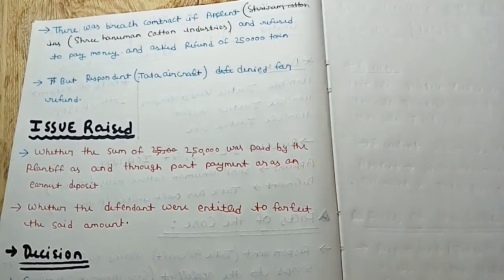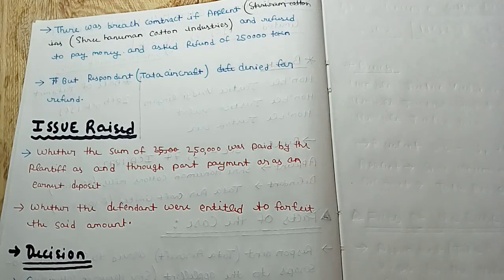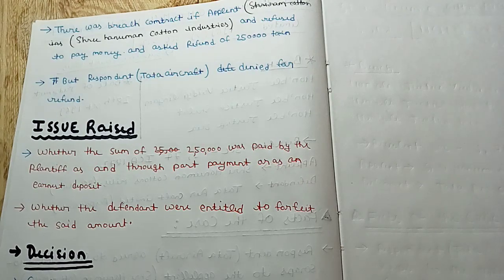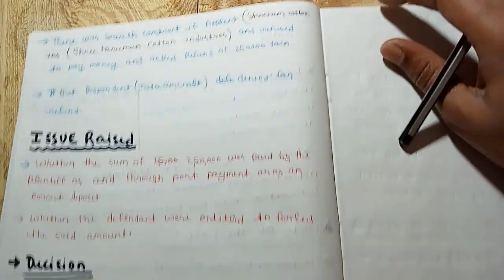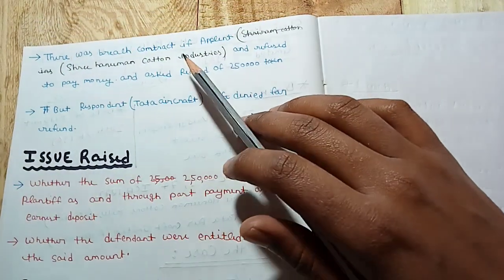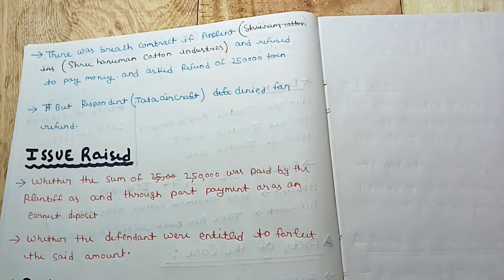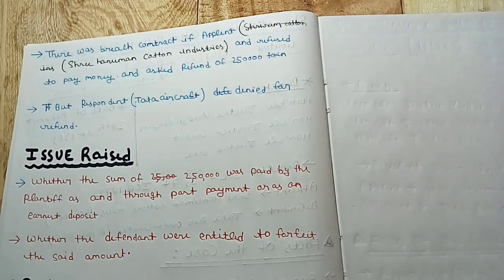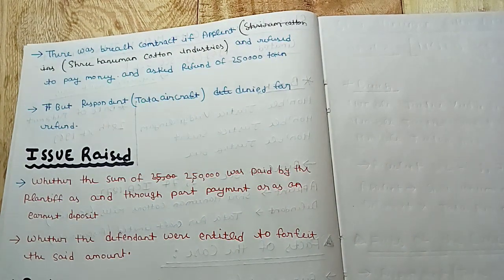There was a breach of contract. The buyer breached the contract by failing to make payment beyond the initial amount that had been paid.